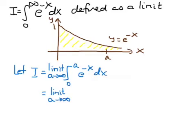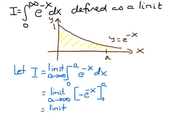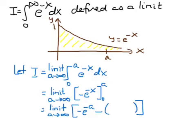Now we calculate the integral for a finite value of a — this is a proper integral because a is finite. The integral of e^(-x) is minus e^(-x), which is straightforward to check by differentiating: differentiating minus e^(-x) brings a minus sign down from the chain rule, giving plus e^(-x), which is the original integrand. We evaluate this between 0 and a.